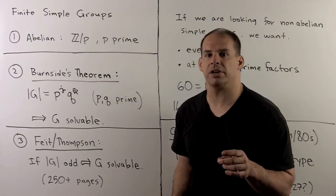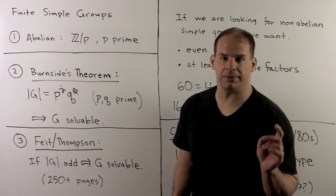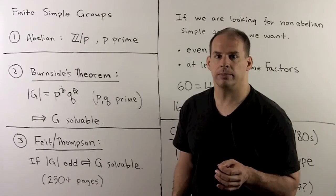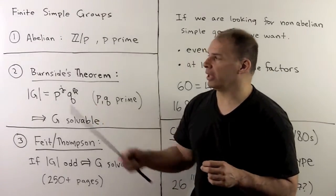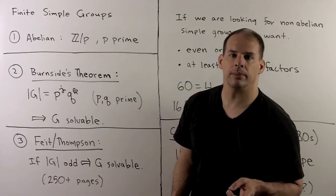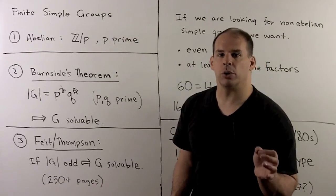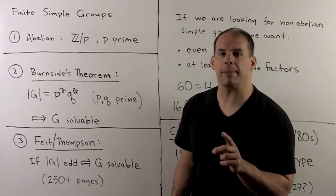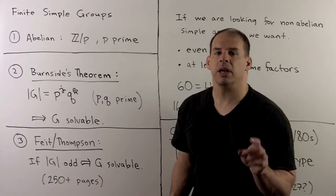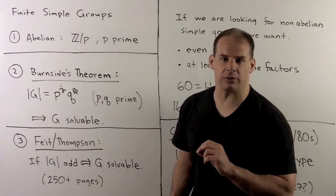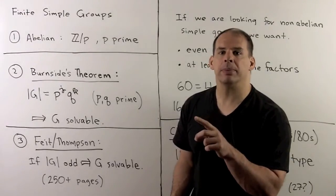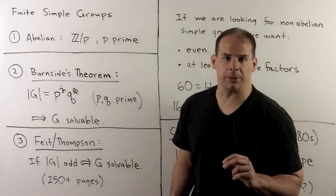To better understand composition series, we focus on the simple factors. That means we want to know about finite simple groups. To start, we're in the abelian case. Then our group is isomorphic to Z mod p, where p is a prime. If we consider groups of order of p to a power, here p is a prime, then the class equation says that the center is non-trivial. We can use that to show that our group is solvable. So that means if we have a group whose order is a power of a prime, it's only simple if it's of the form Z mod p.